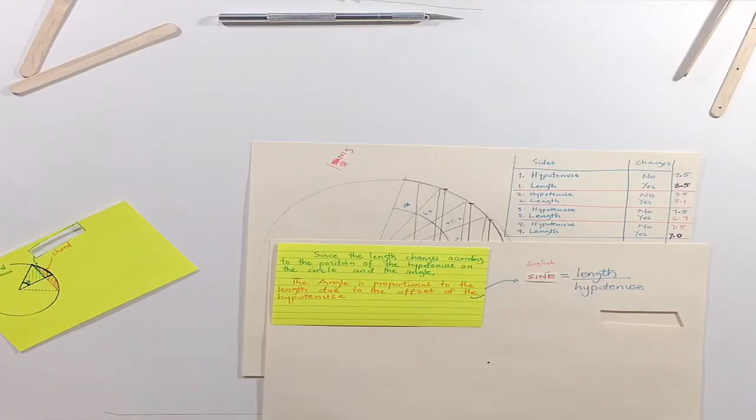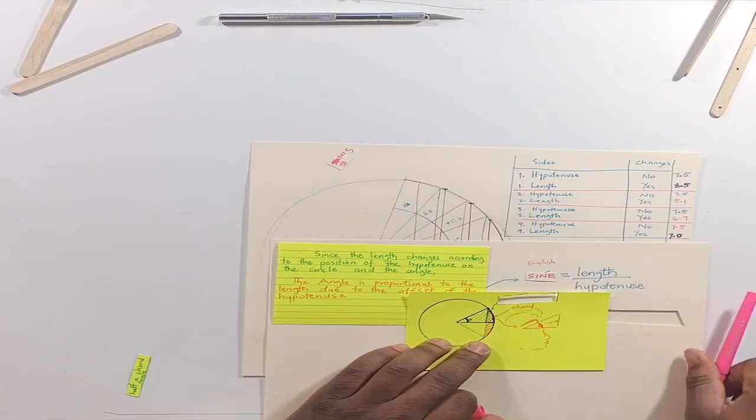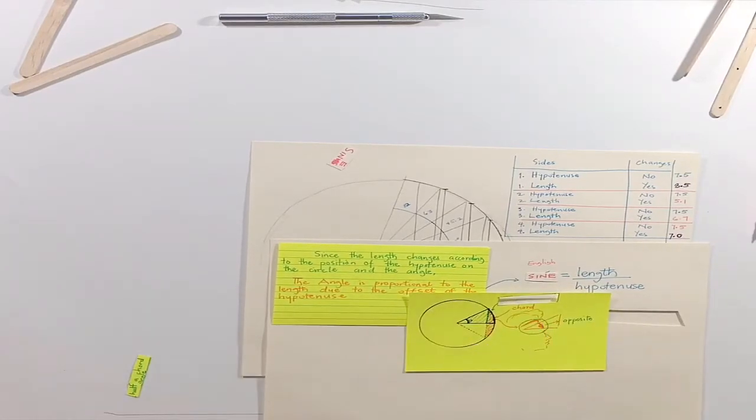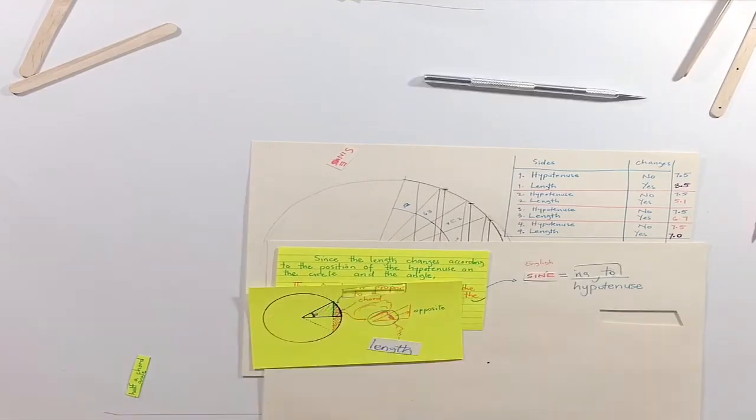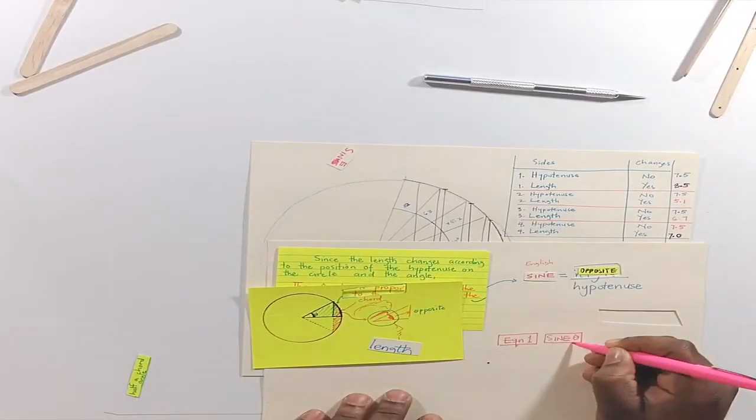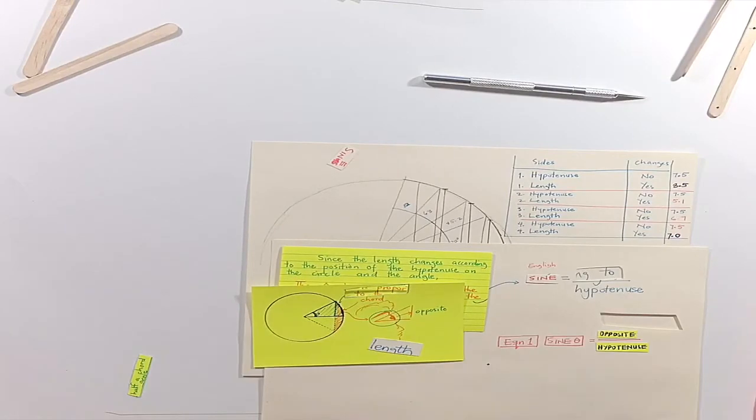Since the length is opposite to the angle, let's replace it with opposite. Now we have the expression sine of an angle is equal to opposite divided by hypotenuse.